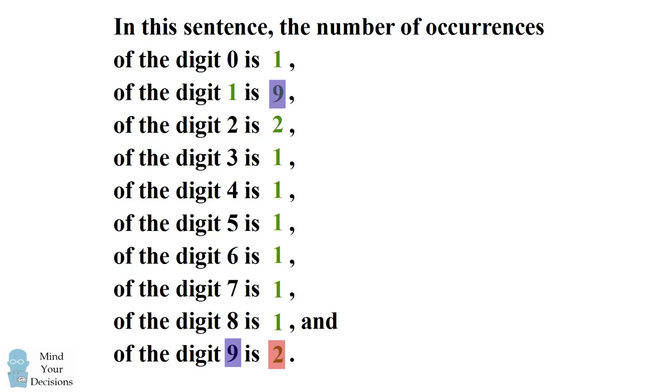We now have the digit two occurring three times in this sentence. So let's say that the digit two should have a value of three.